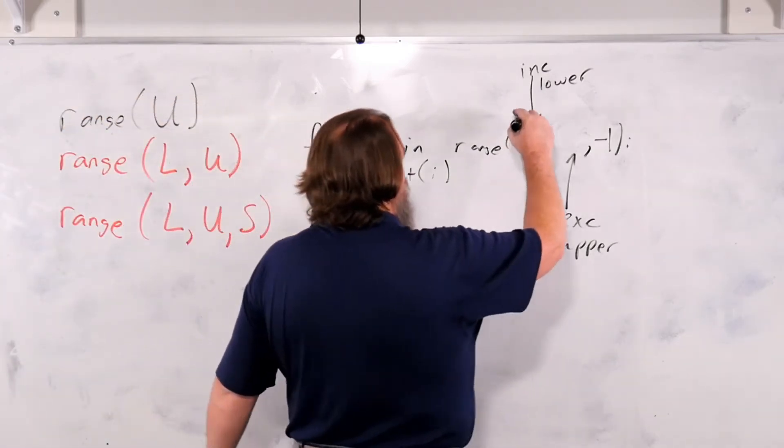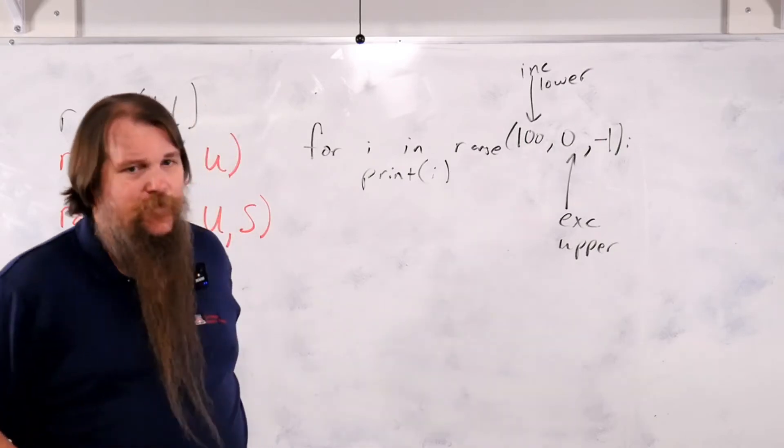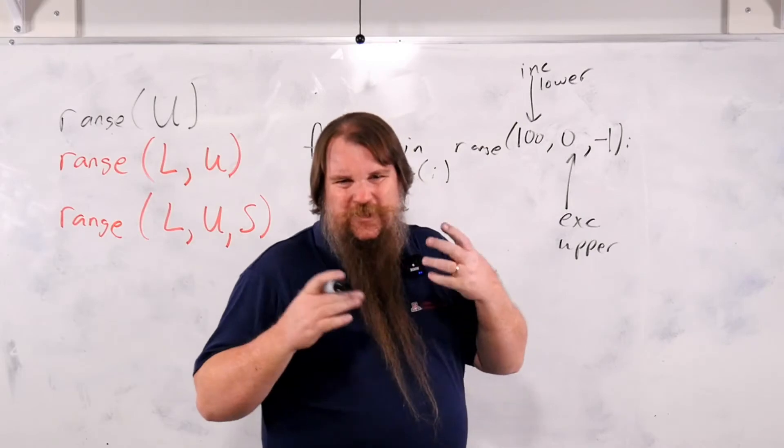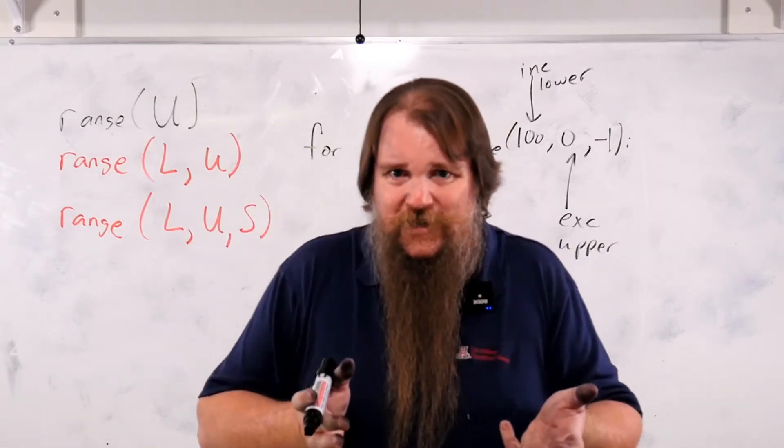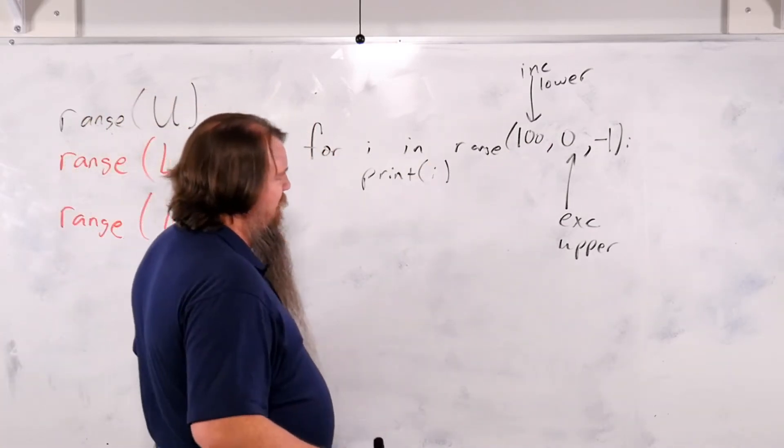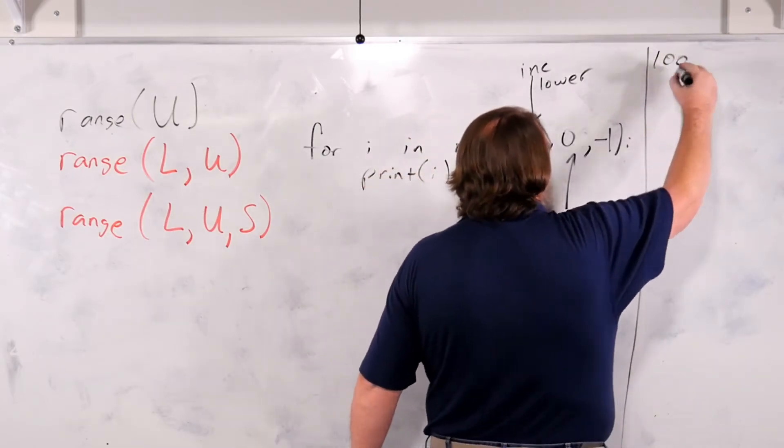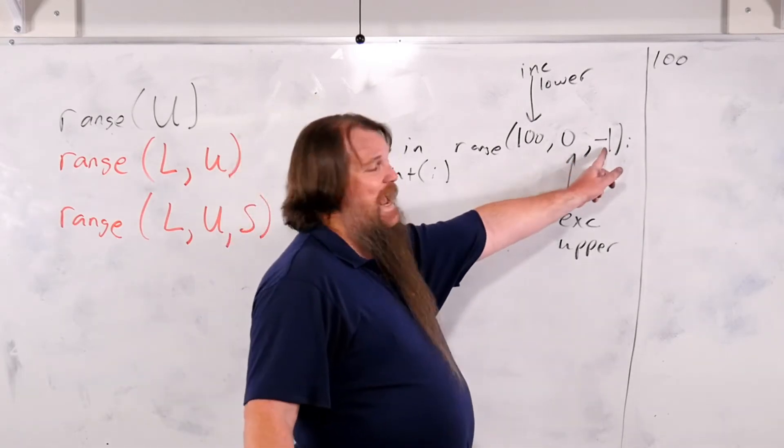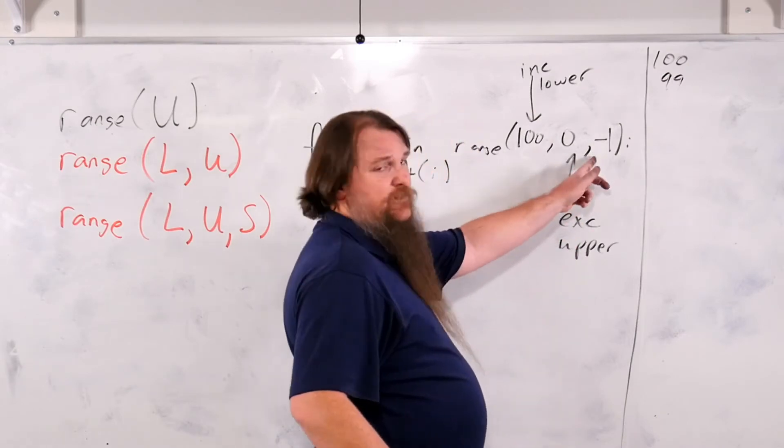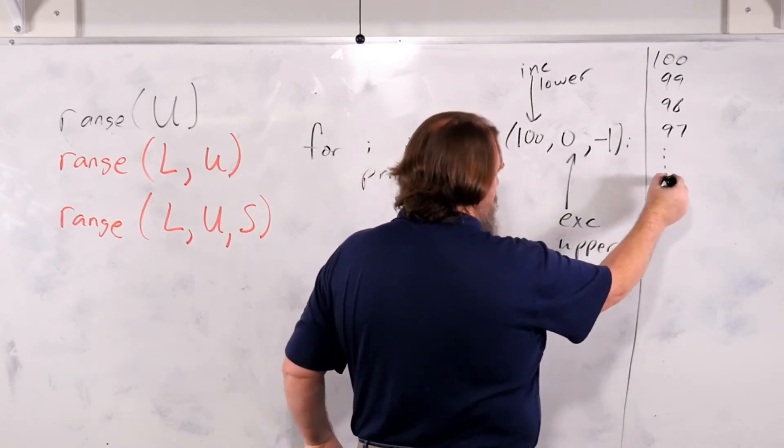So in this case, what we'll do, let's just imagine we put in 100 and 0 here. In this case, what you're going to realize is that calling it the lower bound isn't precisely correct. It's better to think of this as the start point. All right. So if we start at 100, then it will do a loop at 100. Then it will go down by one, 99. Then it goes down by one, 98, 97.